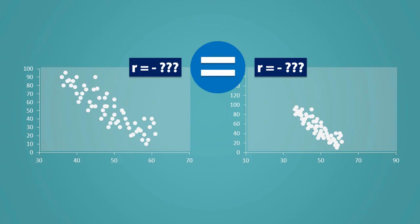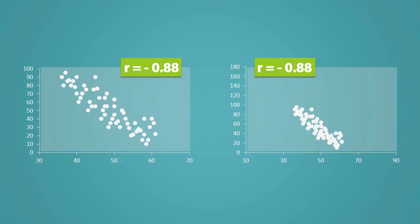Both of these graphs are actually the same, and they have the same value of r. They were just made using different scales, and this is why graphs can deceive us.